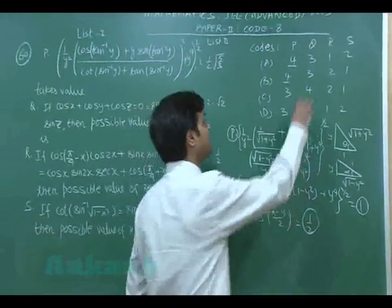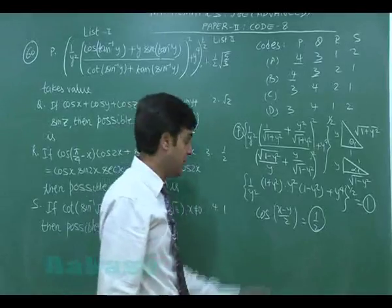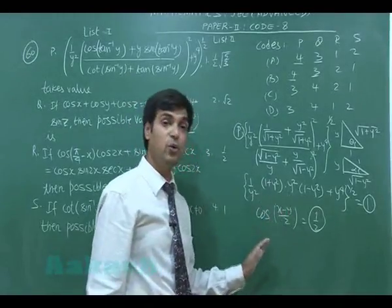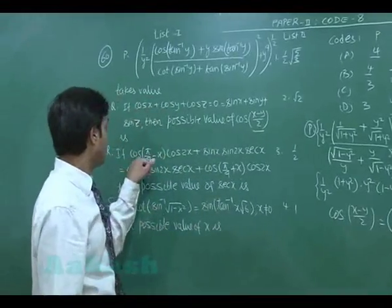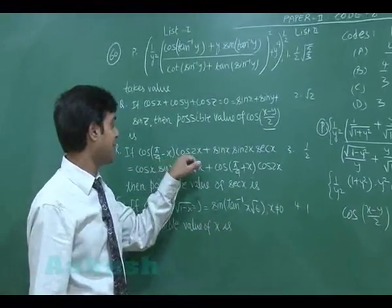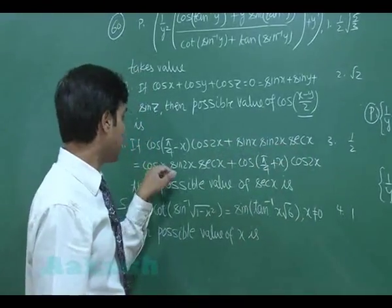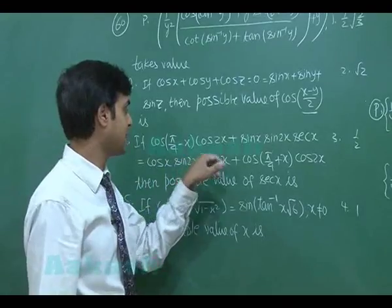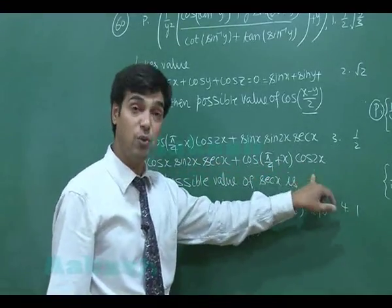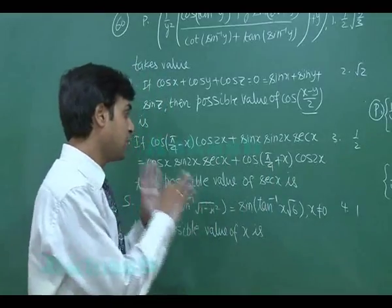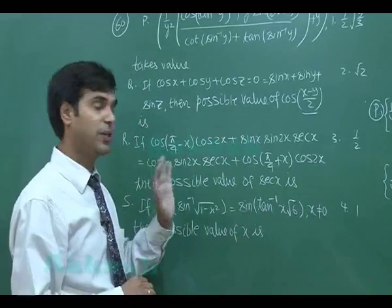The only valid option for Q is the third part, that is 1/2. For Part R: cos(π/4 − x)·cos2x + sin x·sin2x·sec x = cos x·sin2x·sec x + cos(π/4 + x)·cos2x. We need to find the possible value of sec x by simplifying this equation.